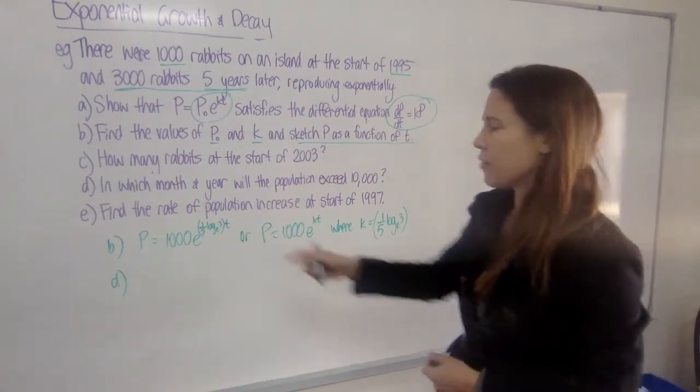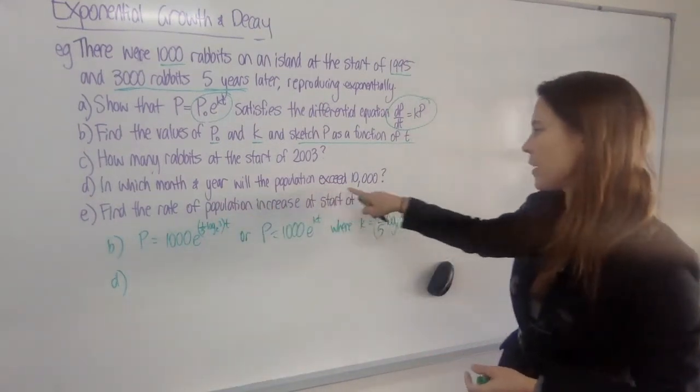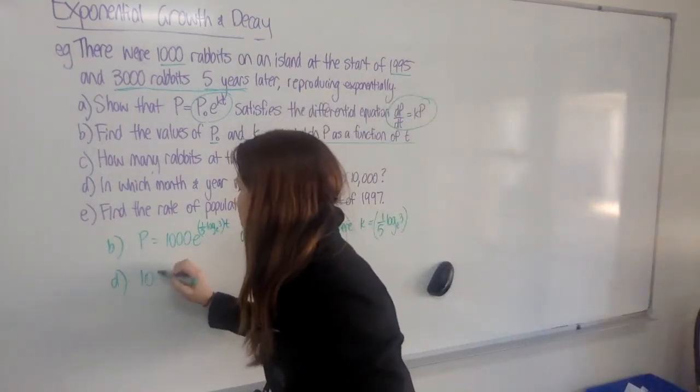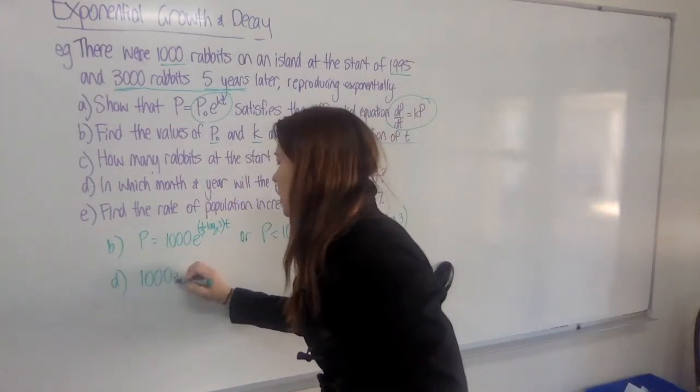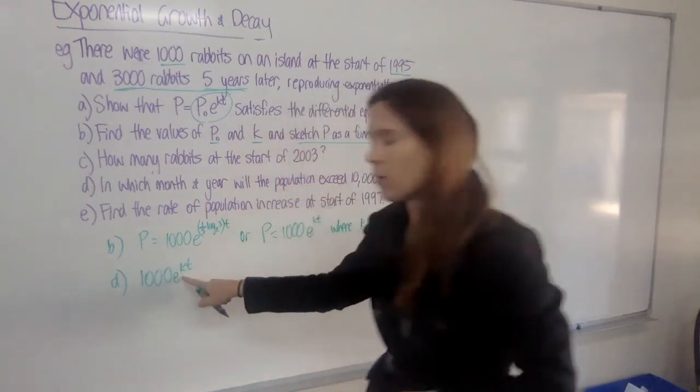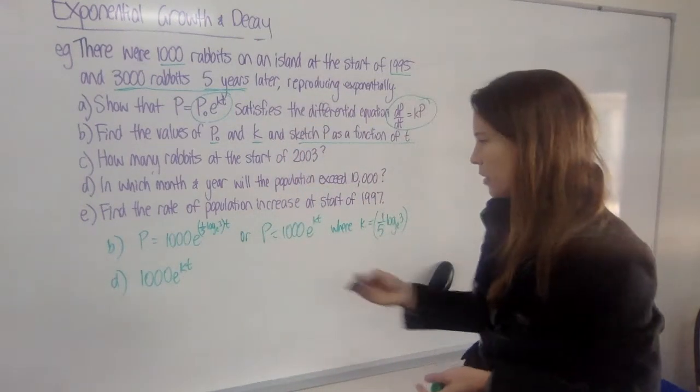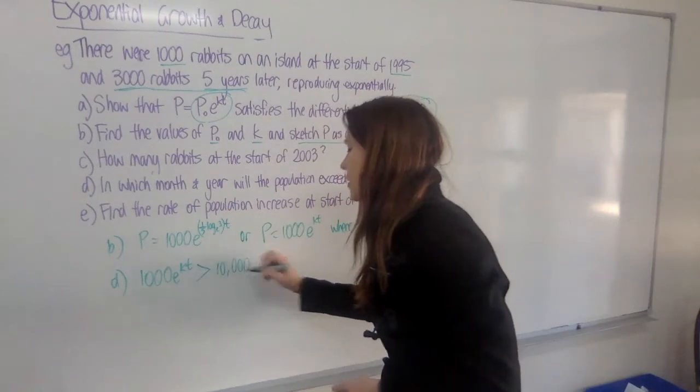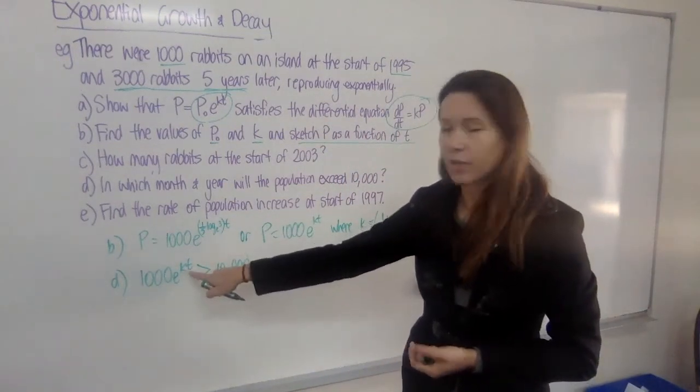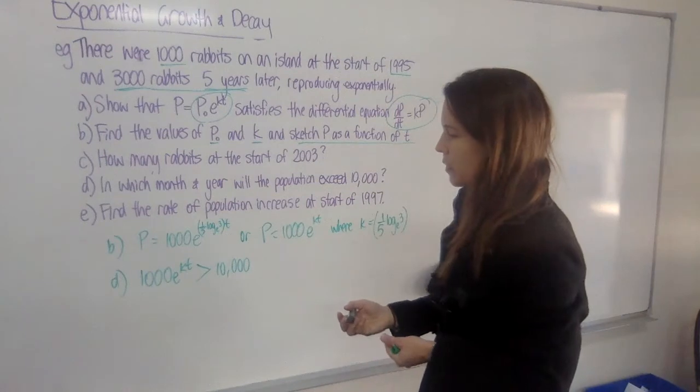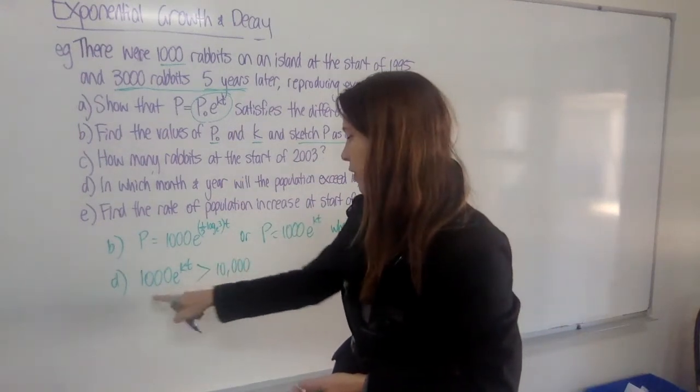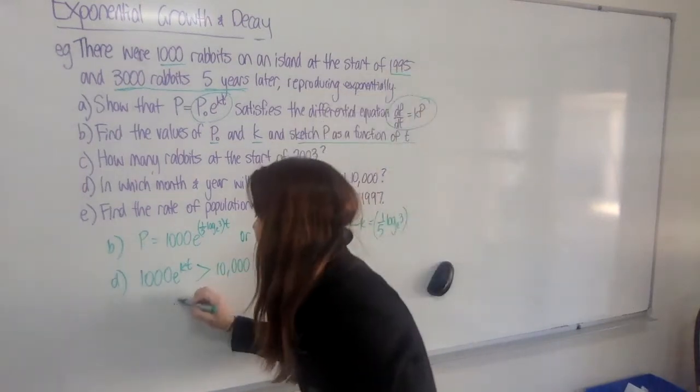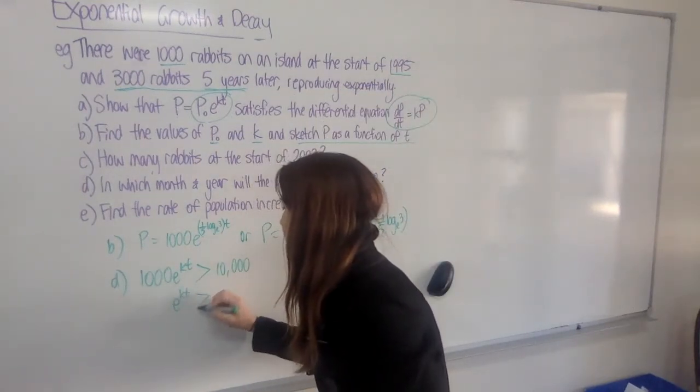Now for part D, I need to find the month and year when the population is going to exceed 10,000. So I need to take my formula for population. I'll use the simple version that doesn't say what k is, even though I do know what it is. And I need to find when that population is going to be bigger than 10,000. And now solve this for t to see when it's going to happen. All right, starting off, let's divide both sides by 1,000 so that we can get this part by itself. So that means e to the power of kt has to be greater than 10.